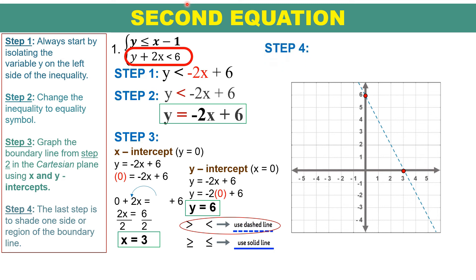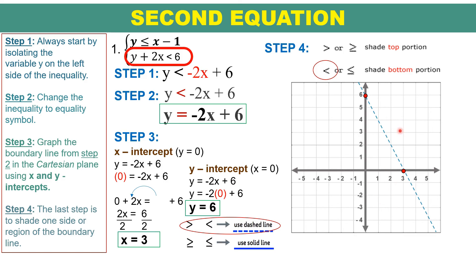For step 4, identify the shaded part by looking at the inequality symbol. The given has a less than symbol, so we shade the bottom part of this graph.